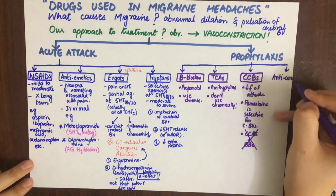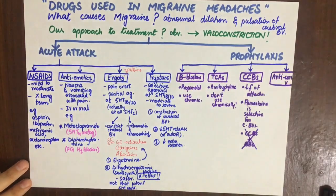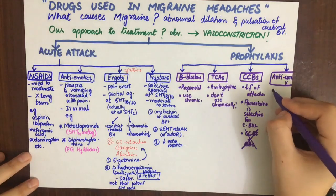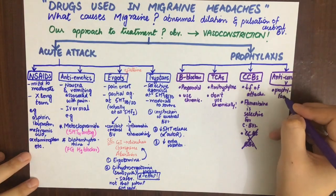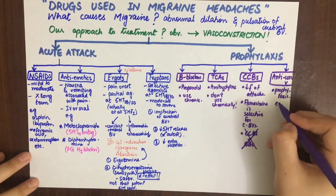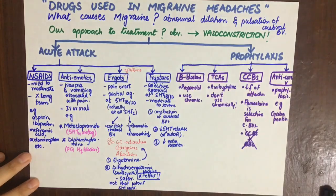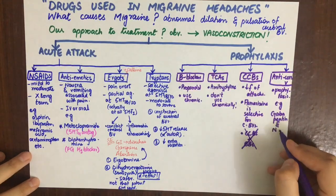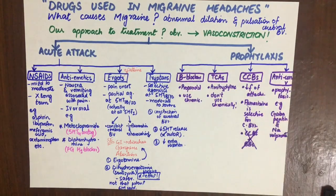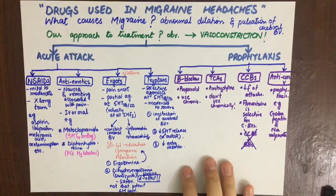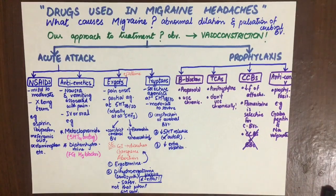Anticonvulsants such as gabapentin and sodium valproate are also used for migraine prophylaxis. They stabilize the neuronal membrane by sodium channel blockade, so there is no repetitive action potential and there is decreased serotonin release. That's it for the drugs used in migraine headaches.